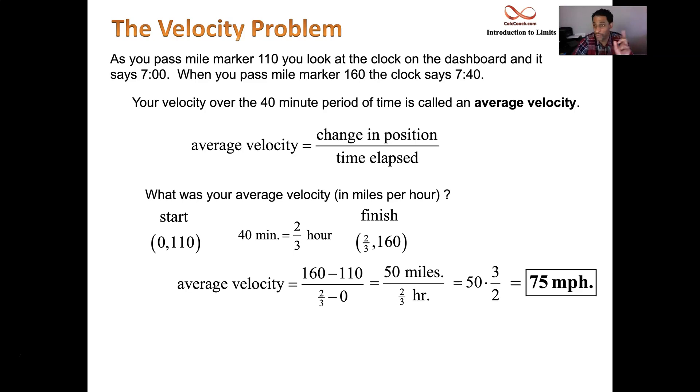Now this is reminiscent of what we just did in the previous video with trying to find the slope of the tangent line and using slopes of secant lines. We did exactly this kind of calculation. We found the slope connecting two points. And so the average velocity, 75 miles per hour, but what about like somewhere in between there? Like at exactly 7:30. How fast were you going? We don't know that.